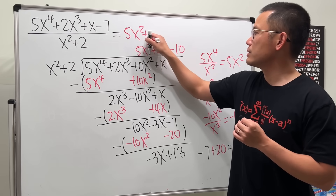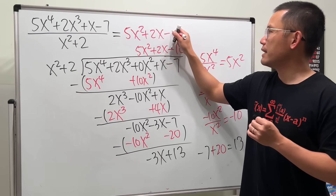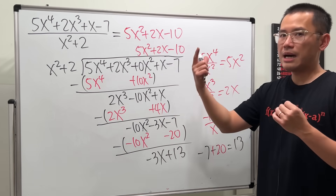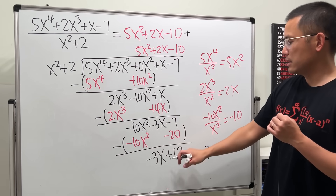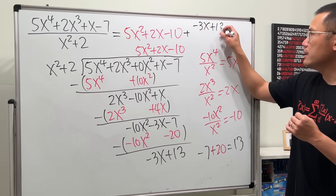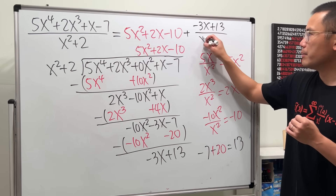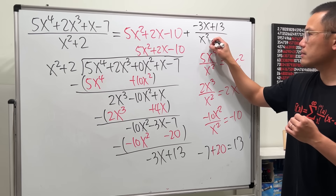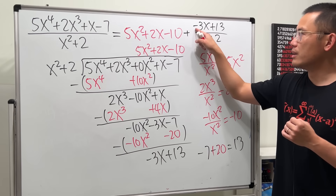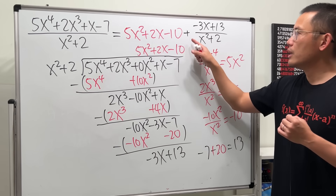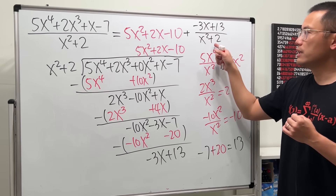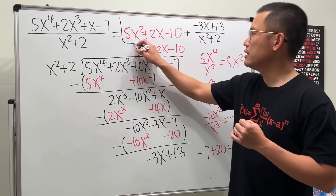The answer is 5x² + 2x - 10, and then we add the remainder negative 3x + 13 over the original denominator x² + 2. Do not put a minus sign in front — just add whatever the remainder is over the original denominator.